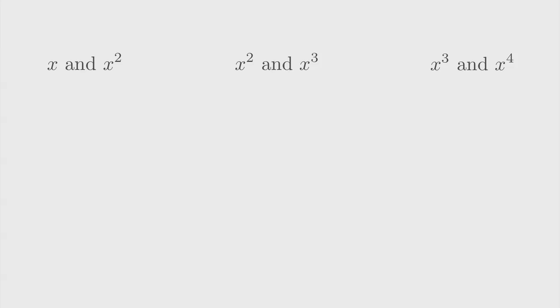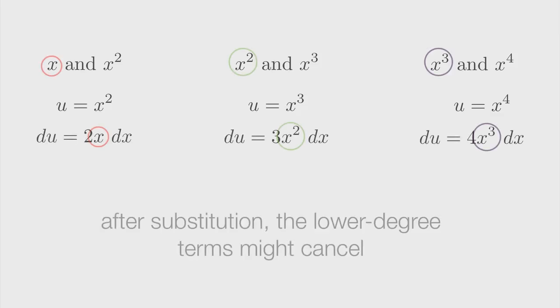The reason these are good candidates is because if you set u equal to the higher degree term, and then you calculate du, you'll see that by taking the derivative, du will include the lower degree term, which means that after substituting back into your integral, you might be able to cancel your lower degree terms.